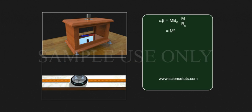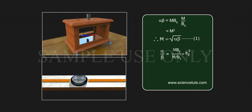The product alpha beta is equal to MBE times M by BE, which is equal to M square. Therefore, M is equal to square root of alpha beta, Equation 1.